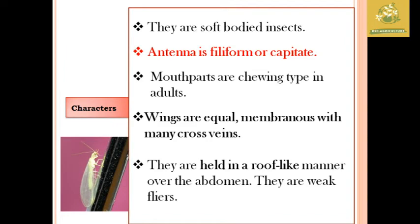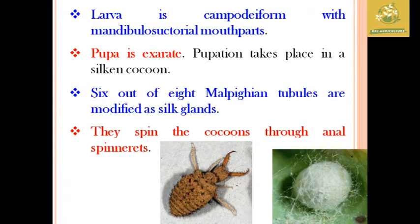While seeing the characteristics of Neuroptera insects, they are said to be soft-bodied insects and they have filiform or capitate type of antennae. The mouthparts are chewing type in adults. Wings are equal and membranous with cross-veins — this is how they get the name Neuroptera. Wings are held in a roof-like manner over the abdomen. They are known as weak flyers.